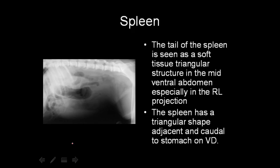The spleen: we see the tail of the spleen, which is usually ventral and very commonly triangular in dogs. On a ventrodorsal view, the head of the spleen may be seen behind the stomach on the left-hand side. In cats, we rarely see the spleen, and if we do see it, it usually suggests splenomegaly, though newer information indicates we can also see it in normal cats without any splenomegaly.